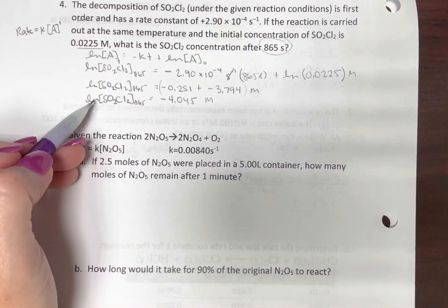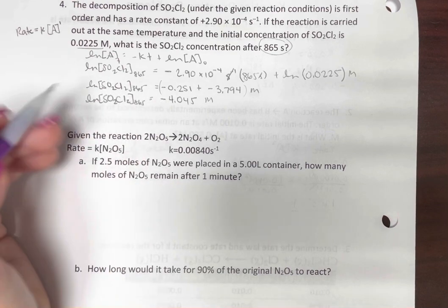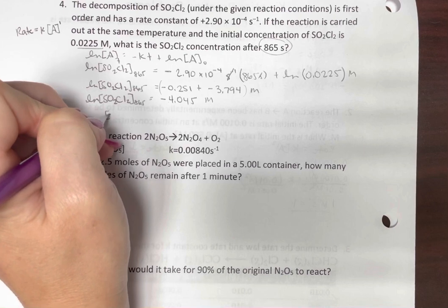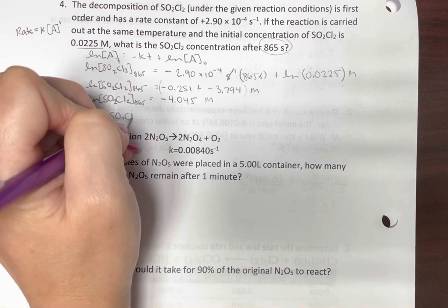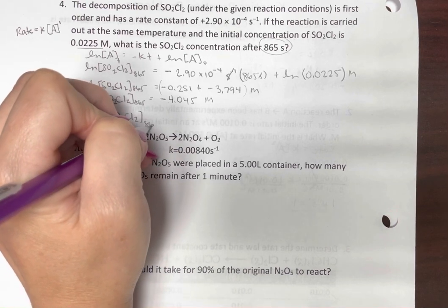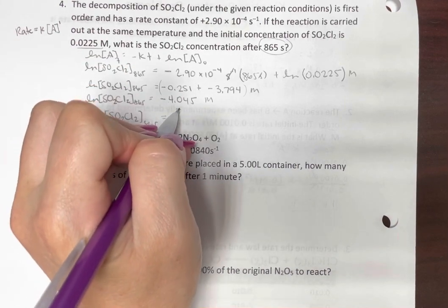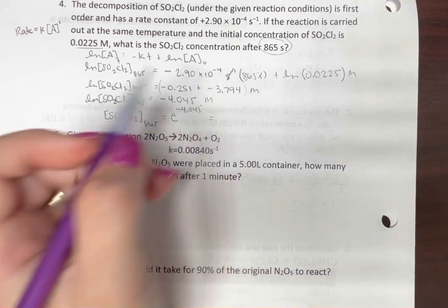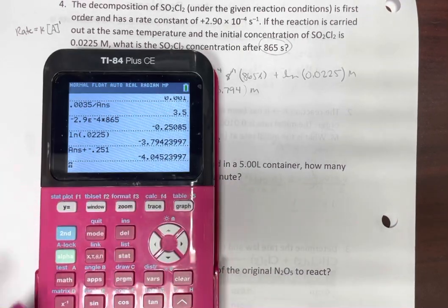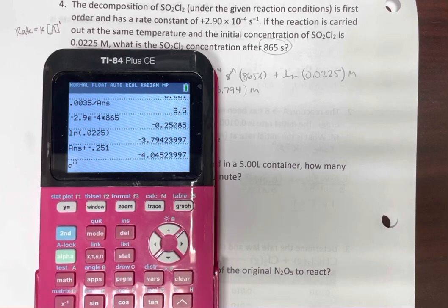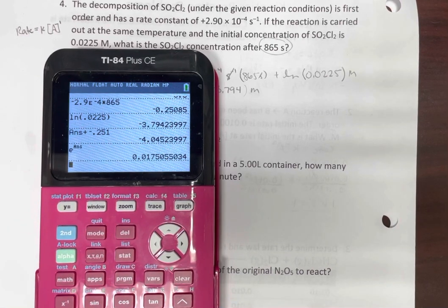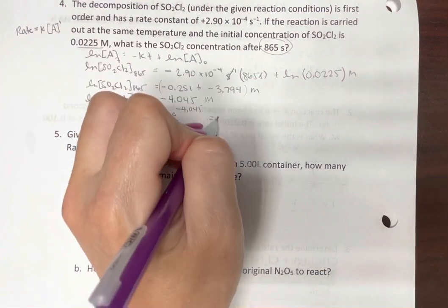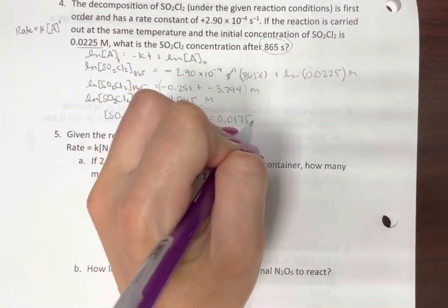So now we need to undo this natural log. We undo the natural log by taking E to this number. So that tells us our concentration of SO2Cl2 at 865 seconds equals E to the negative 4.045. So let's just take E to that answer. And we get 0.075 and molar.